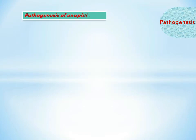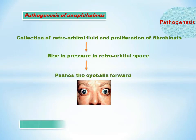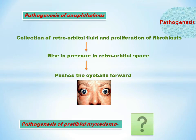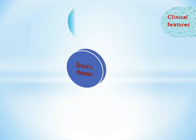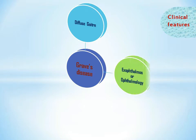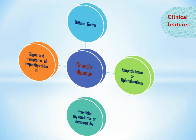Exophthalmos is due to collection of retroorbital fluid and proliferation of fibroblasts, leading to a rise in pressure in the retroorbital space, consequently pushing the eyeballs forward. The pathogenesis of pretibial myxedema is not yet known. The four main features of Graves disease are diffuse goiter, exophthalmos or ophthalmopathy, pretibial myxedema or dermopathy, and signs and symptoms of hyperthyroidism.